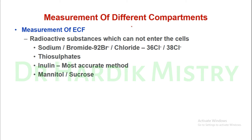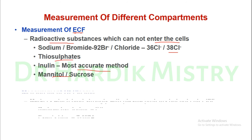Measurement of the ECF compartment uses radioactive substances that cannot enter the cell, including sodium, bromide (82Br⁻), chloride (36Cl⁻, 38Cl⁻), thiosulfates, and inulin — which is the most accurate method for measuring ECF volume — as well as mannitol and sucrose.